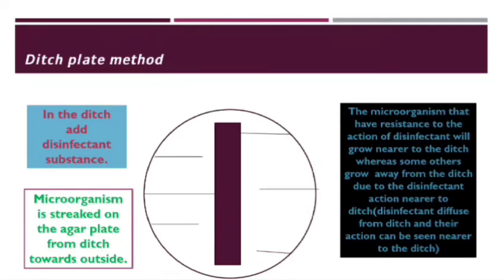This is because the disinfectant which is in the ditch will diffuse from the ditch, so that its action will be nearer to the ditch also. Those microorganisms which do not have resistance power to this disinfectant will not be growing at the nearer portion of that disinfectant or that ditch.